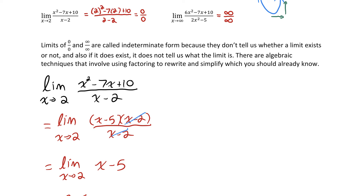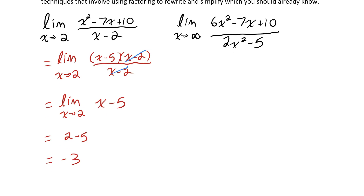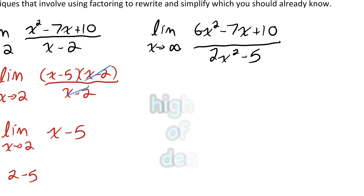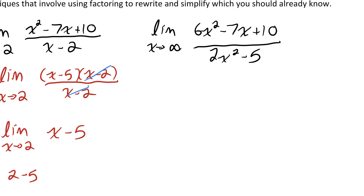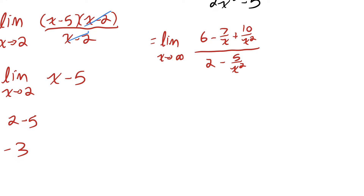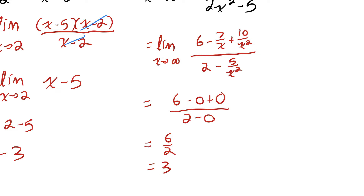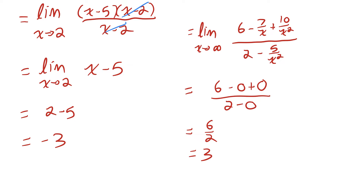For the other example — a limit at infinity — when you get indeterminate form of infinity over infinity, a good strategy is to divide all terms by the highest power of x in the denominator. Dividing by x squared and looking at each term as x approaches infinity gives 6 minus 0 plus 0 over 2 minus 0, which equals 6 over 2, which is 3.